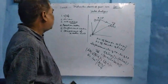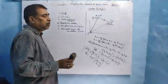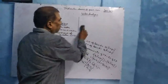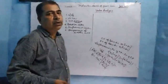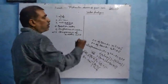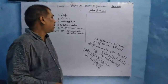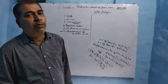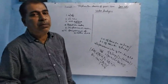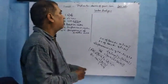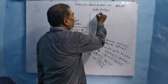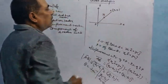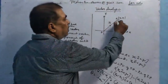Now we are going to teach the component of a vector, which is also a very important topic. Resolution of a vector into two or more vectors is called resolution, and the resolved vectors are called components. If they are mutually perpendicular to each other, it is called rectangular resolution.